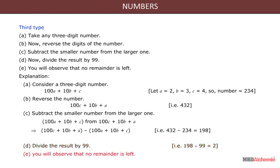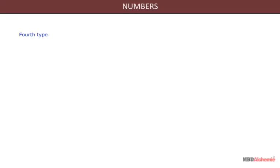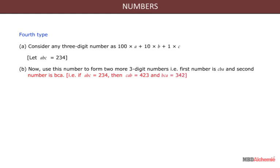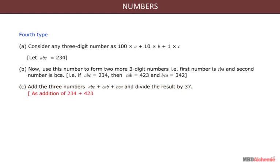Fourth type: Consider any three digit number abc equals 100a plus 10b plus c. Let abc equal 234. Form two more three digit numbers: cab equals 423 and bca equals 342. Add the three numbers: 234 plus 423 plus 342 equals 999. Divide the result by 37: 999 divided by 37 equals 27. You will observe that there is no remainder left.